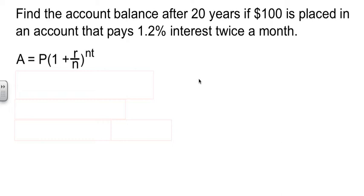So let's work with this one. We are looking for the account balance after 20 years. If we put $100 in the bank today, and it's going to pay 1.2% interest twice a month. Okay, that's the tip-off to how many times it's going to happen. If it happens twice every month, and there's 12 months, that means I'm going to get 24 times to get interest. Okay? So N is 24. We know our principal amount, 100. We know our rate, 0.012%. Remember, you move it two places over.